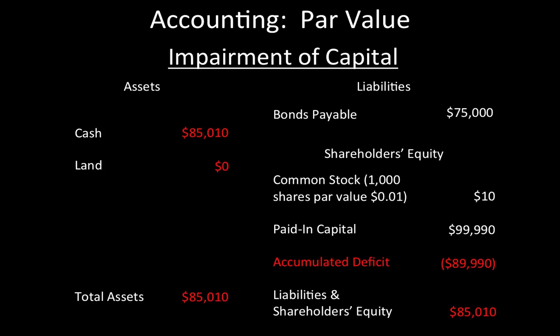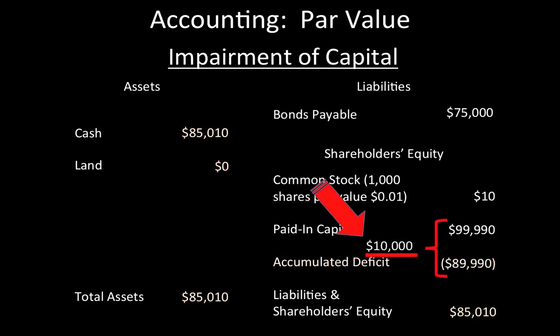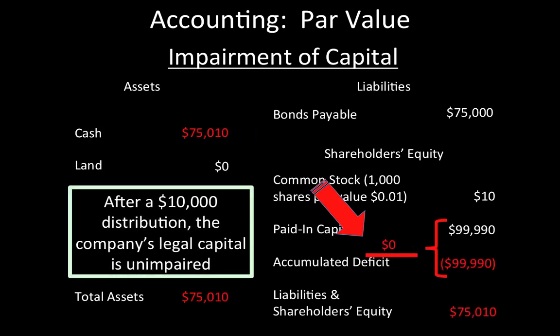The shareholders are looking at a significant loss and might be tempted to distribute the company's cash to themselves before the bond comes due. However, the impairment of capital rule prohibits them from distributing more than $10,000, which is the remainder after netting the accumulated deficit and the paid-in capital. The rest of shareholders' equity is the $10 in legal capital. A $10,000 distribution would increase the accumulated deficit to $99,990, which completely offsets the $99,990 in paid-in capital — leaving shareholders' equity of exactly $10. Its legal capital would not be impaired, that is, reduced below $10.